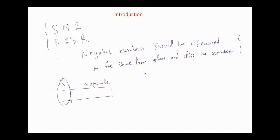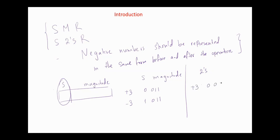In sign-magnitude representation, we have the sign and the magnitude. For example, in a 4-bit register, plus 3 is represented as 0011 and minus 3 is represented as 1011. However, in the 2's complement representation, plus 3 has the same representation, but minus 3 should be represented in the 2's complement form, and the 2's complement of 3 is 1101.